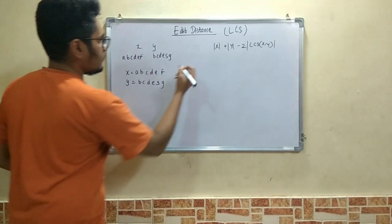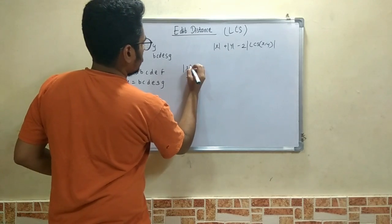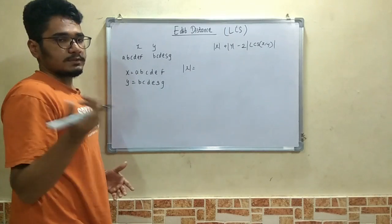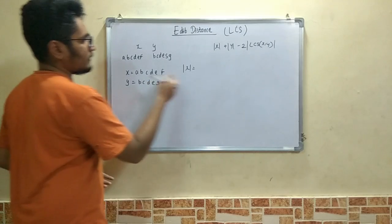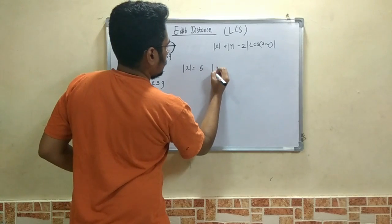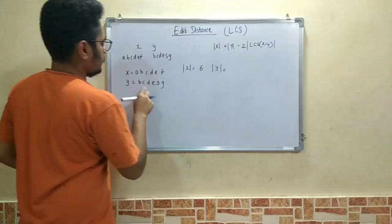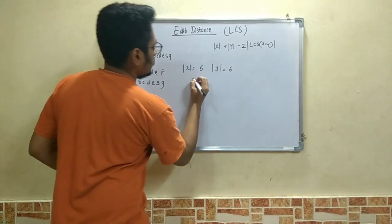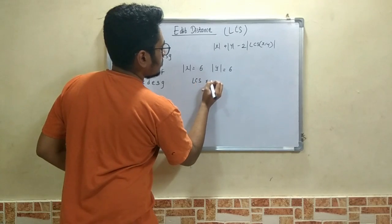Next, we calculate mod x. Mod x is the frequency or the terms contained in x, that is 1, 2, 3, 4, 5, 6. Mod y: 1, 2, 3, 4, 5, 6. We will first calculate LCS x comma y.